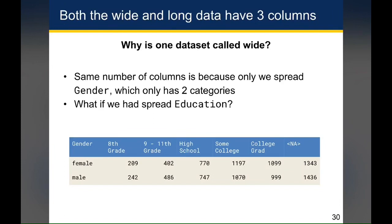You might have noticed that both data frames on the last slide only had three columns, so it would be fair to ask why I'm calling one wide and one long when they have the same number of columns. In this case, they have the same number of columns only because the variable we spread on — gender — has only two categories. Typically, when we spread a variable it will have more than two categories. So if we had spread the education variable, we would have a dataset that is definitively wider than the long form. Just recognize that data being wide or long is more of a relative thing than a numerical thing.